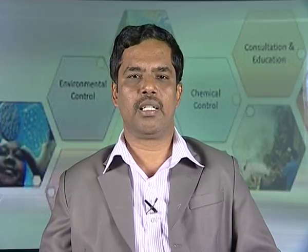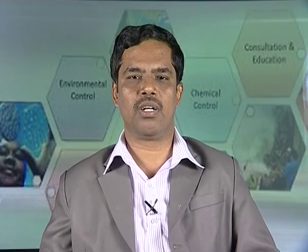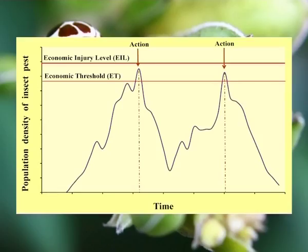Let us study the second chapter, that is time of application of pest control measures. From the point of view of pest control, there are two threshold levels in the pest populations: damage threshold and economic threshold. The economic threshold is also known as action threshold.